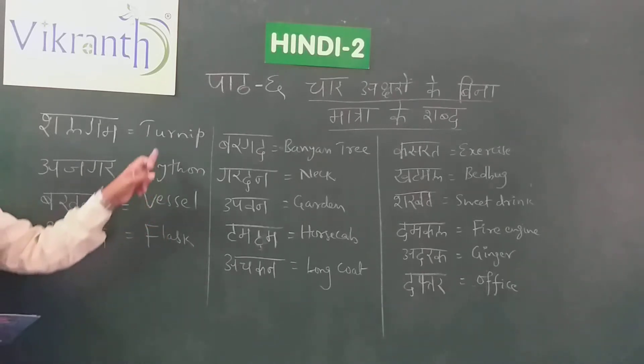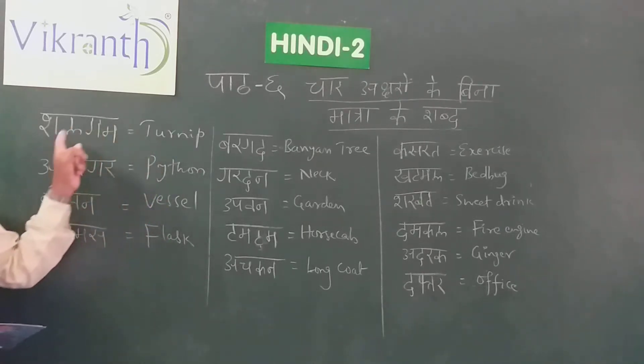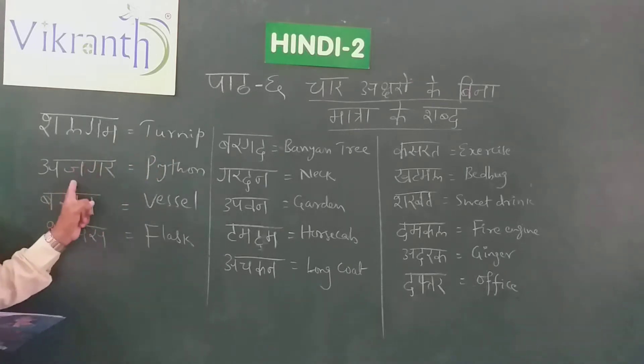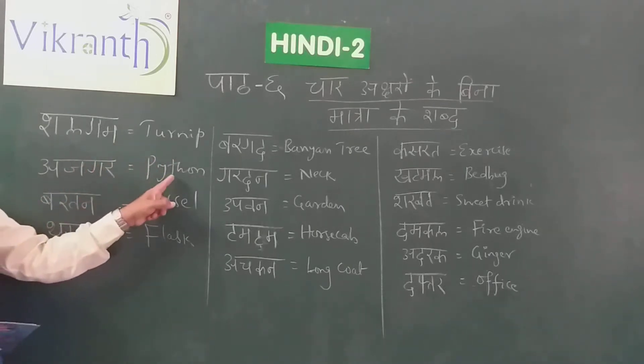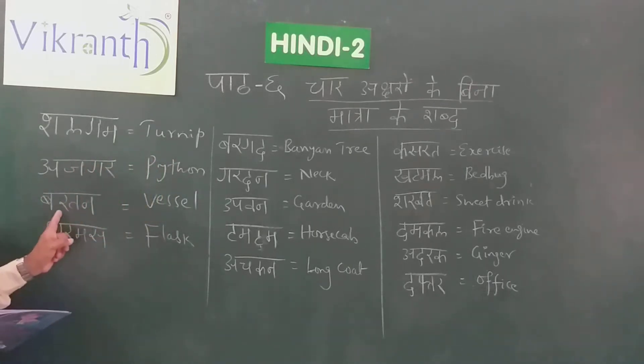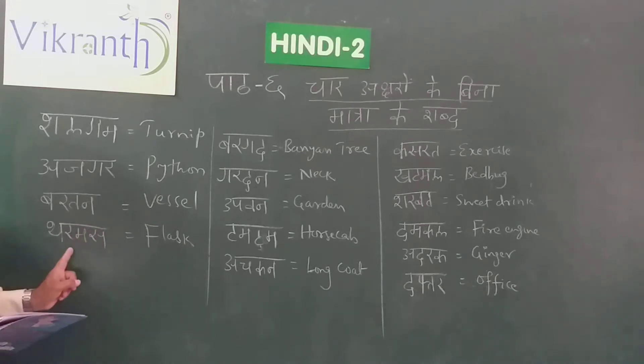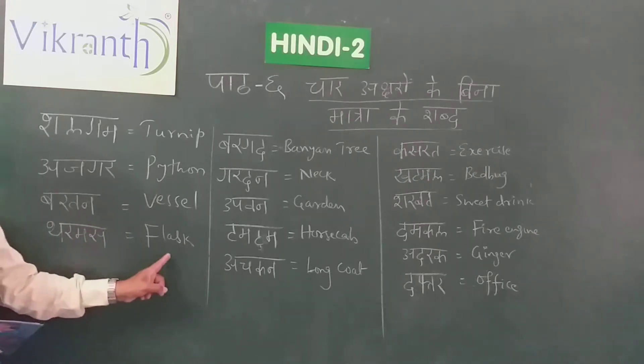Let us review: Turnip — Shalgam — Turnip. Ajgar — Python. Barthan — vessel. Thermas — flask.